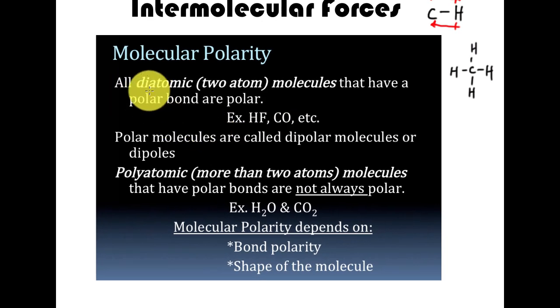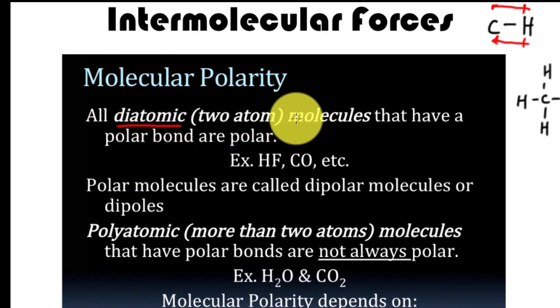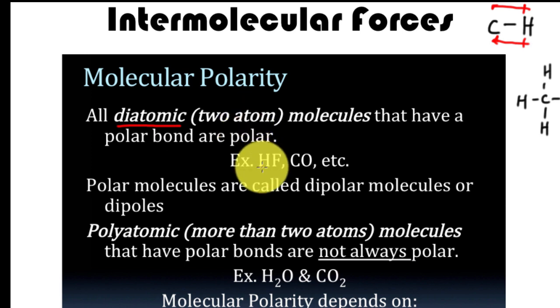So to do that, we're going to look at two different types of structures. One is a diatomic, and these are just the seven special diatomics. There's other diatomic molecules out there. Hydrogen fluoride, carbon monoxide, those are all examples of structures that are two atoms in length. So that would be a diatomic molecule.